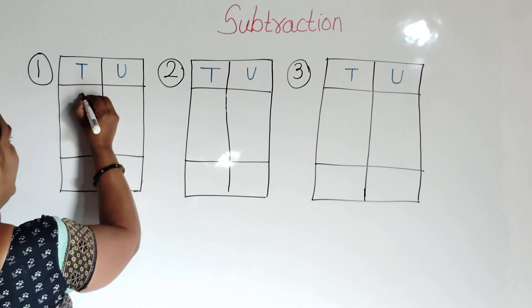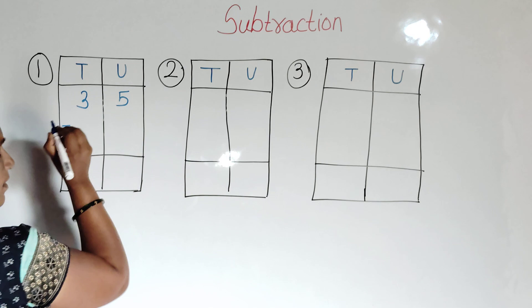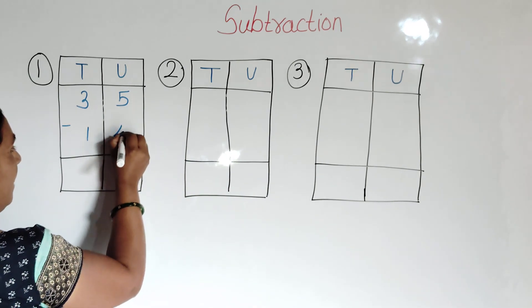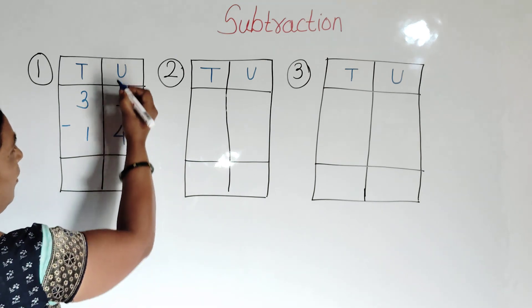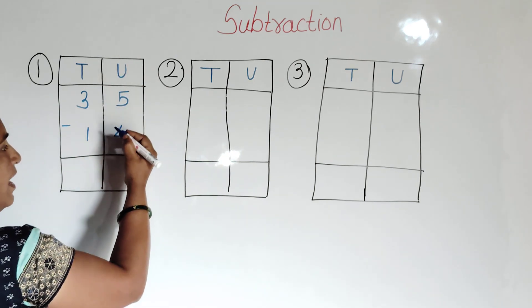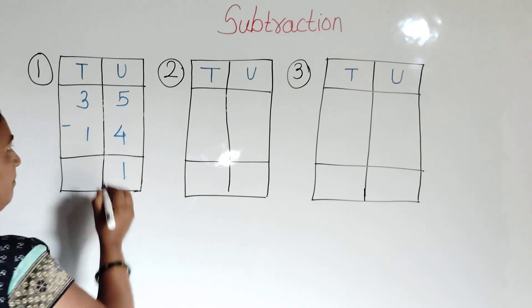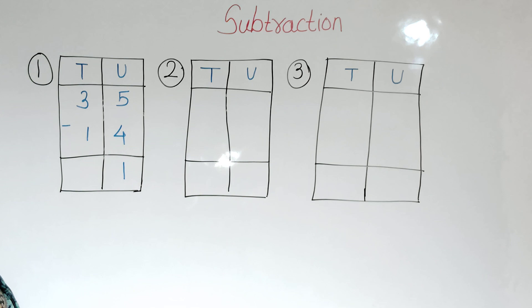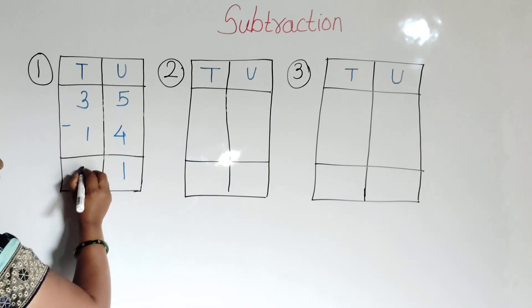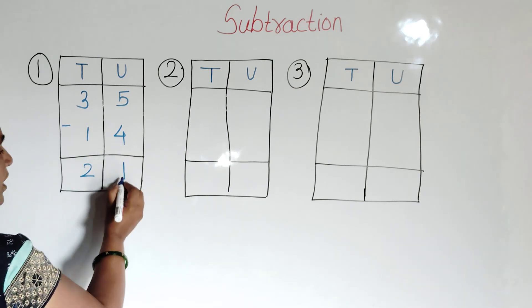35 minus 14. First, units place: 5 minus 4 is equal to 1. Then tens place: 3 minus 1 is equal to 2. So the answer is 21.